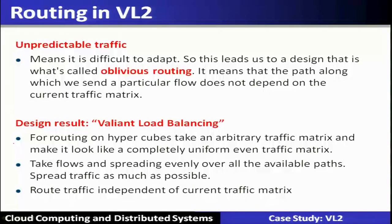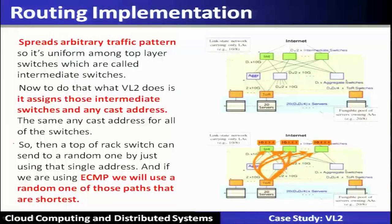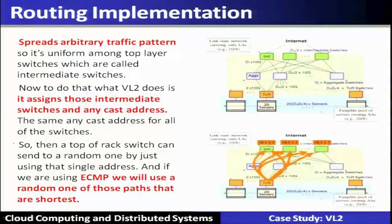Valiant Load Balancing takes flows and spreads them evenly over all available paths, making it a multipath routing approach. The traffic is spread as much as possible independent of the current traffic matrix, making it uniform among all top-layer intermediate switches. To achieve this, VL2 assigns those intermediate switches with an anycast address so that the top-of-rack switch can send to a random one by using a single address. Using ECMP, a random one of the shortest paths is selected.